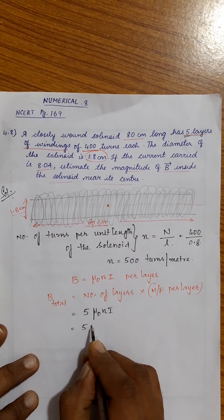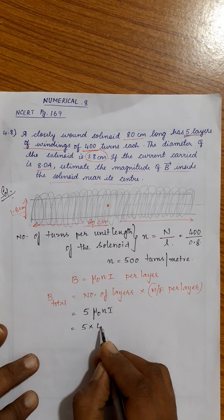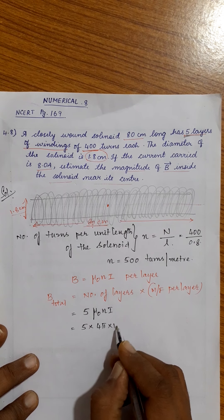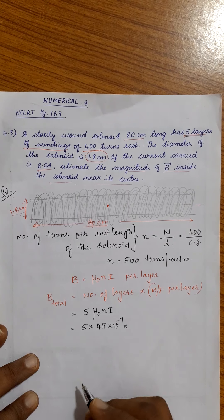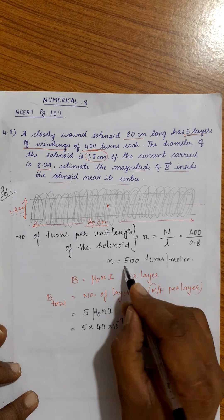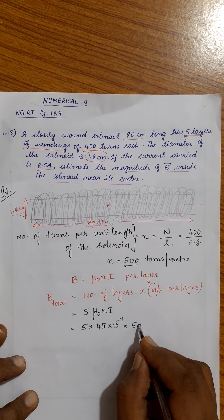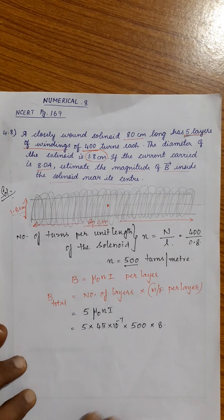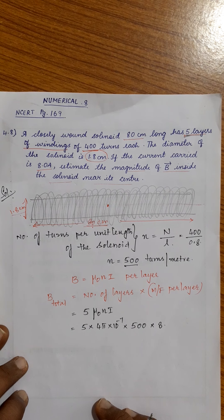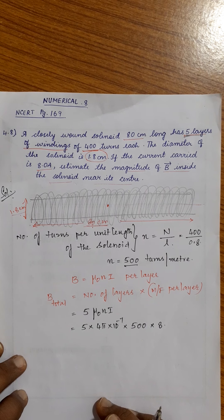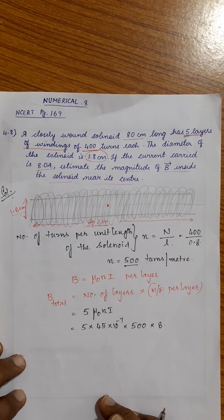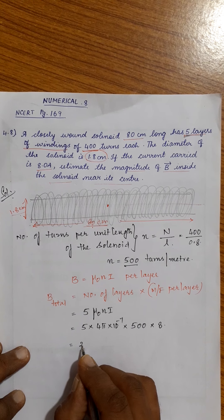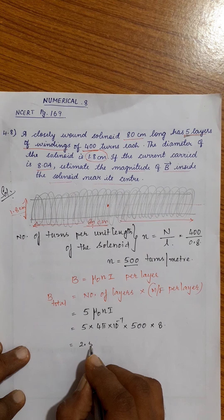So we have: 5 × μ₀ × n × I = 5 × (4π × 10⁻⁷) × 500 × 8 amperes, which gives 2.5 × 10⁻² tesla.